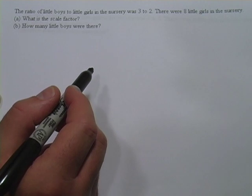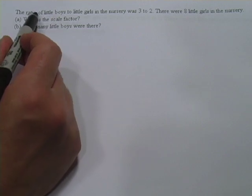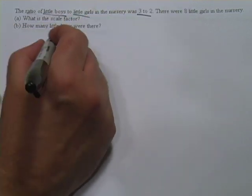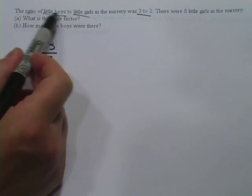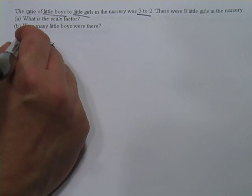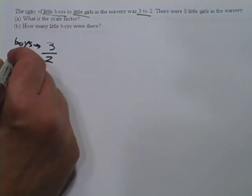The first thing you want to do when you're given a ratio is to put it in a fraction. That's a good way to express a ratio. It says the ratio of little boys to little girls was 3 to 2, so I write that like this: 3 over 2, that's a fraction. But it's important for me to remember what's on the top and what's on the bottom. It said little boys to little girls was 3 to 2, so I know it's boys on the top and girls on the bottom.